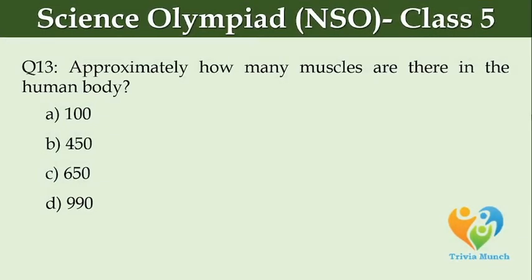Approximately how many muscles are there in the human body? Option A, 100. Option B, 450. Option C, 550. Option D, 990.